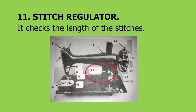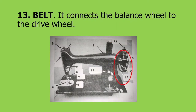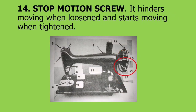Eleven, stitch regulator: it checks the length of the stitches. Twelve, balance wheel: it sets the mechanism in motion. Thirteen, belt: it connects the balance wheel to the drive wheel. And lastly, stop motion screw: it hinders moving when loosened and starts moving when tightened.